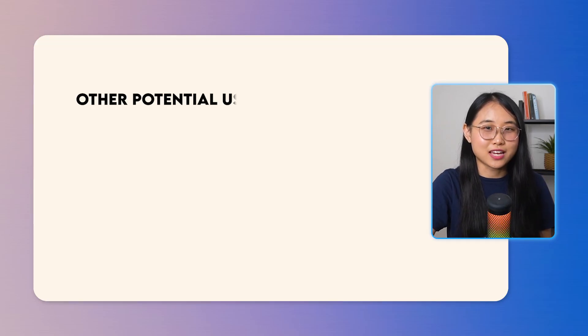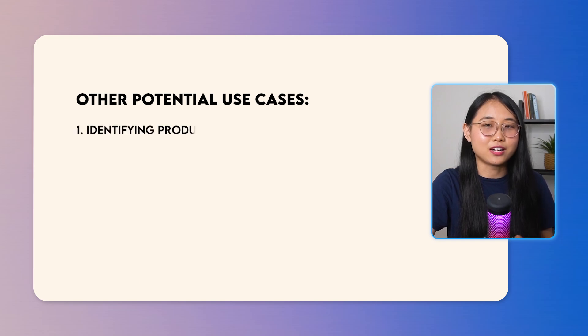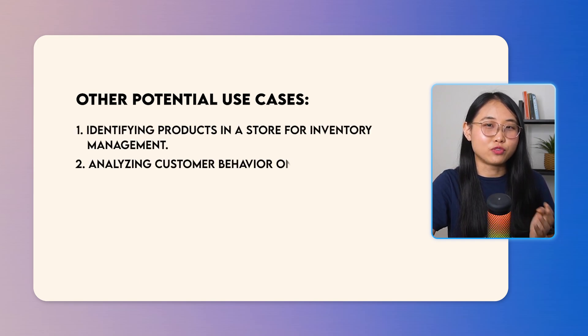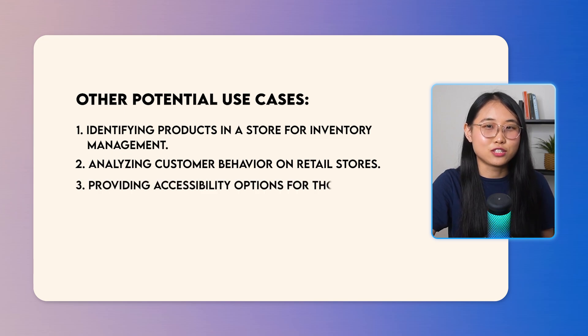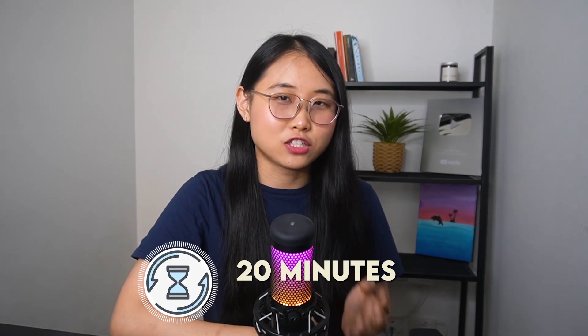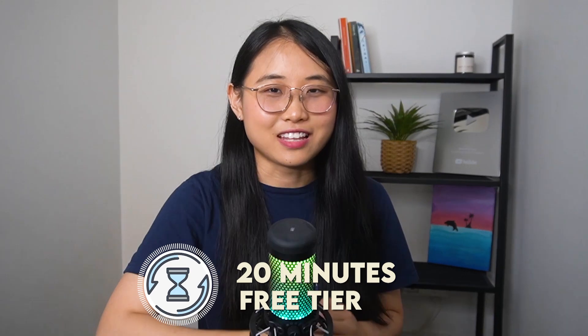Other potential use cases include identifying products in a store for inventory management, analyzing customer behavior in retail stores, and providing accessibility options to those who are visually impaired. Amazon Rekognition is a pretty useful service that can be applied in many industries, so I would recommend building a project to get some experience with it. The project will take about 20 minutes to build and falls within the free tier.